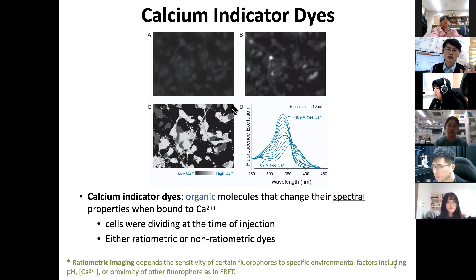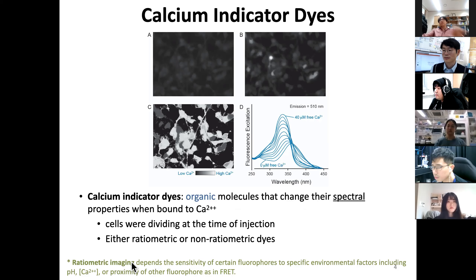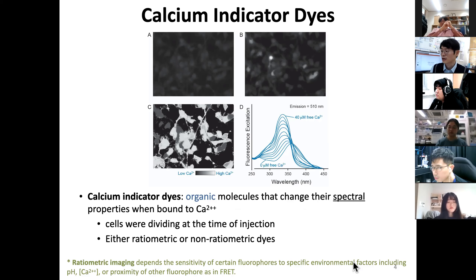The ratiometric calcium indicator method is more complicated, but why do people want to use it? It depends on the sensitivity of the fluorophore to specific environmental factors — they change their spectrum and we make use of that. For example, pH change, calcium ions, or even when two fluorophores are close to each other via FRET, you can also use ratiometric imaging.